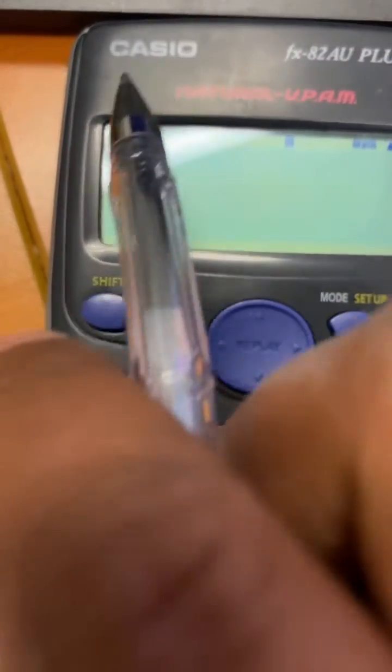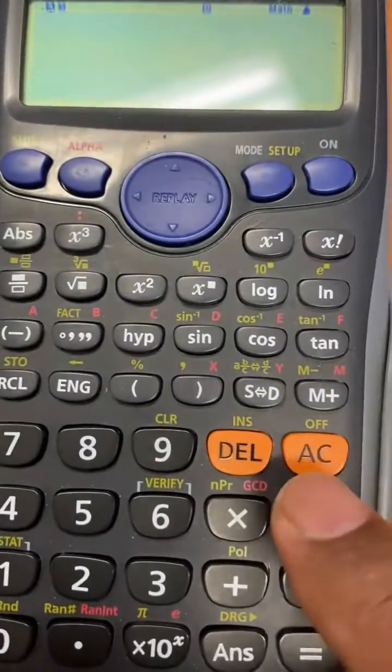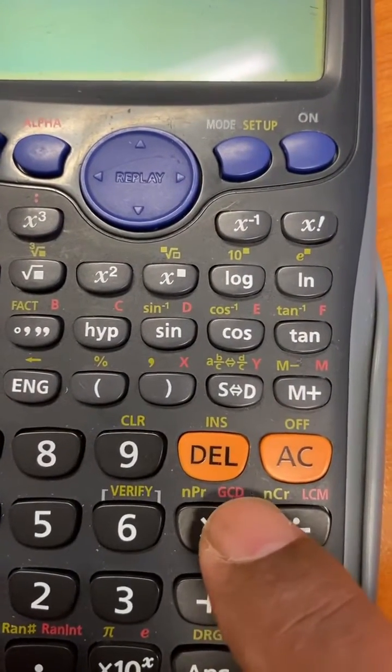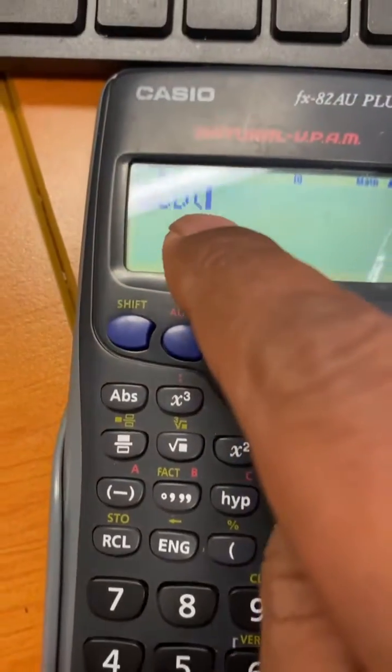You will press the alpha key. You see the A button written on top here. That means you have pressed it successfully. Then press the multiplication sign because you want to access the GCD function here. When you press the multiplication sign you see GCD here.